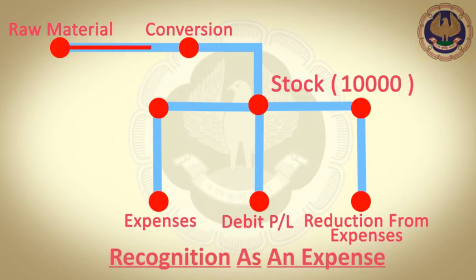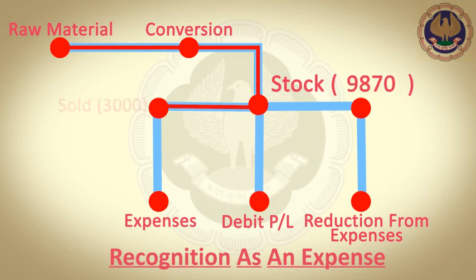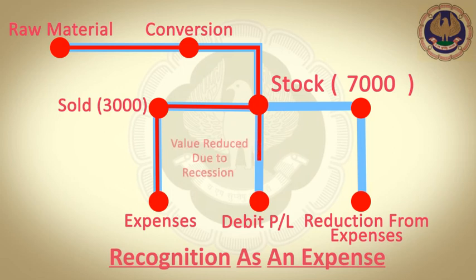Recognition as an Expense: When inventories are sold, the carrying amount of inventories shall be recognized as an expense in the period in which the related revenue is recognized. The amount of any write-down to net realizable value and all losses of inventories shall be recognized as an expense in the period in which the write-downs or loss occurs.